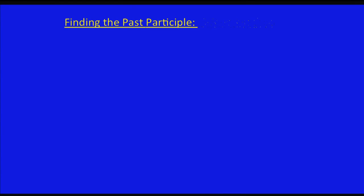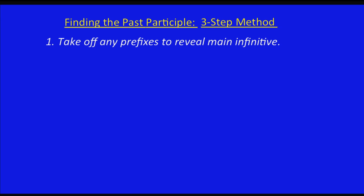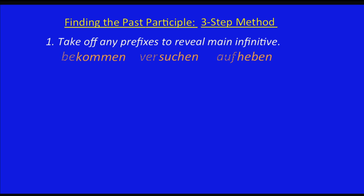Finding the past participle — a three-step method. Nummer eins: take off any prefixes to reveal the main infinitive. So here we've got some verbs. We're going to take off any prefixes. We've got the main infinitive there. That's what we would do first.